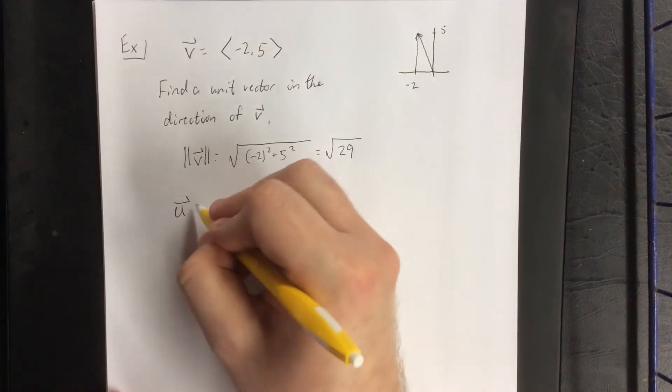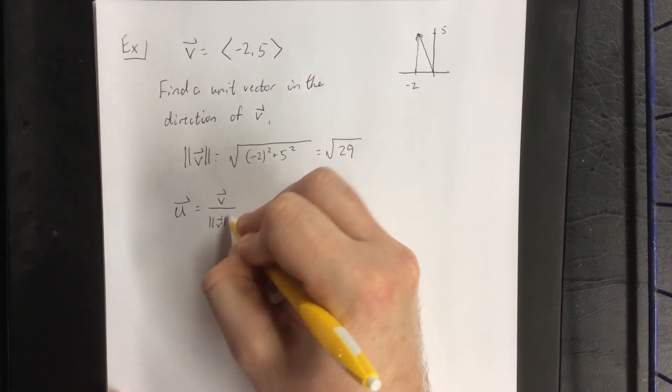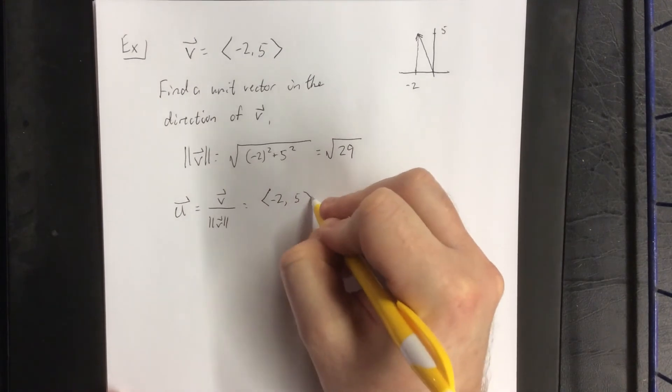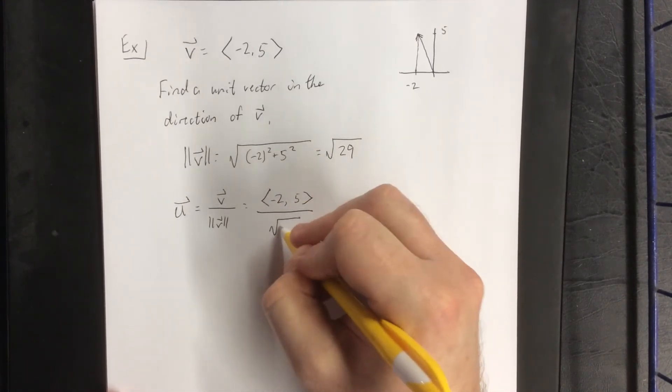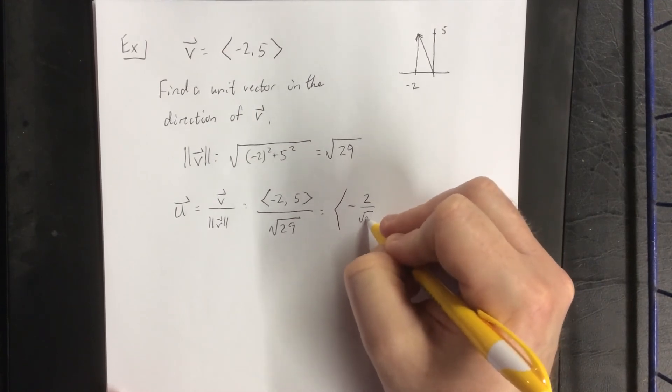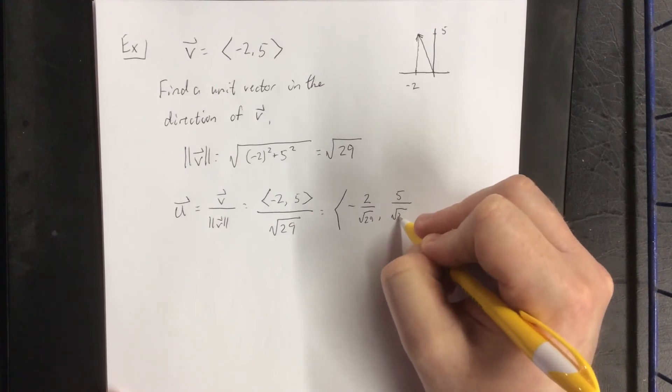Now the corresponding unit vector is found by taking vector v and dividing by this magnitude. That gives us -2 over the square root of 29 and 5 over the square root of 29.